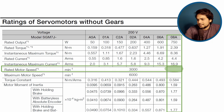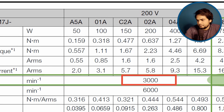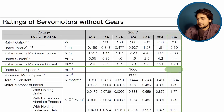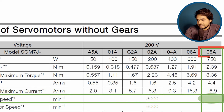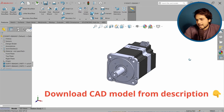We can also see the rated speed is 3000 rpm, which fits our requirement of 2400 rpm. So now we have to download the CAD model of this servo motor. The model is SGM7J-08A, and I have already downloaded the CAD model.